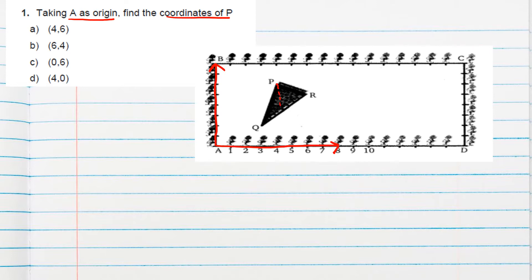So if you draw a line perpendicular to x-axis, this is perpendicular, and perpendicular to y-axis, we will get the x coordinate which is 4, and y coordinate, if I write here 1, 2, 3, 4, 5, 6. 4 comma 6 is the coordinate of P, which is in option A. So option A will be correct option.